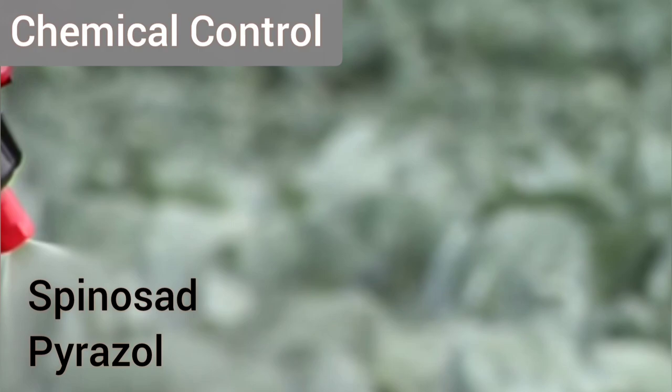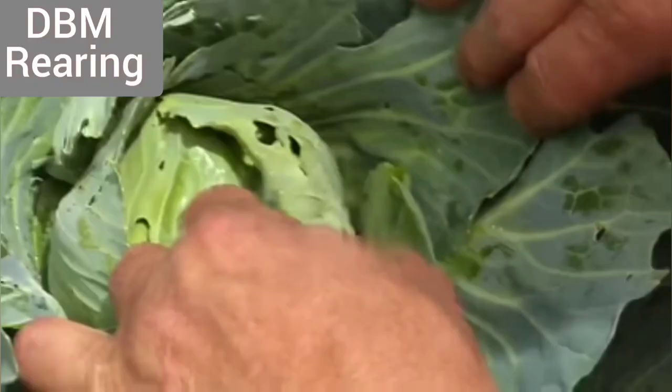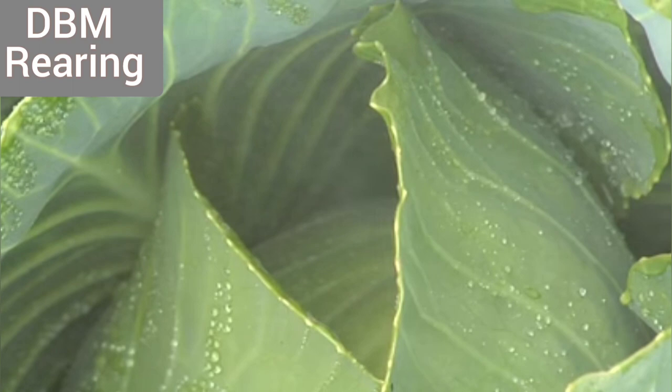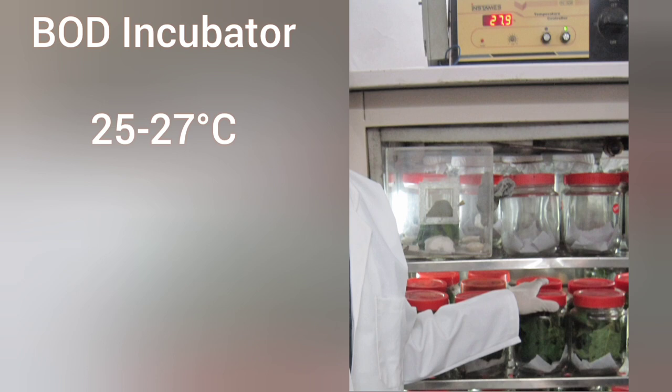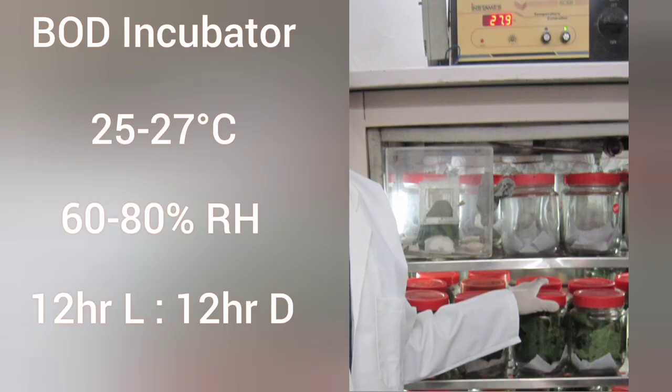We rear DBM in the laboratory to study the effect of different control methods. To provide environmental conditions, we use a BOD incubator in which we set the temperature at 25 to 27 degrees Celsius, relative humidity at 60 to 80 percent, and the photoregimen at 12 hours light and 12 hours dark.